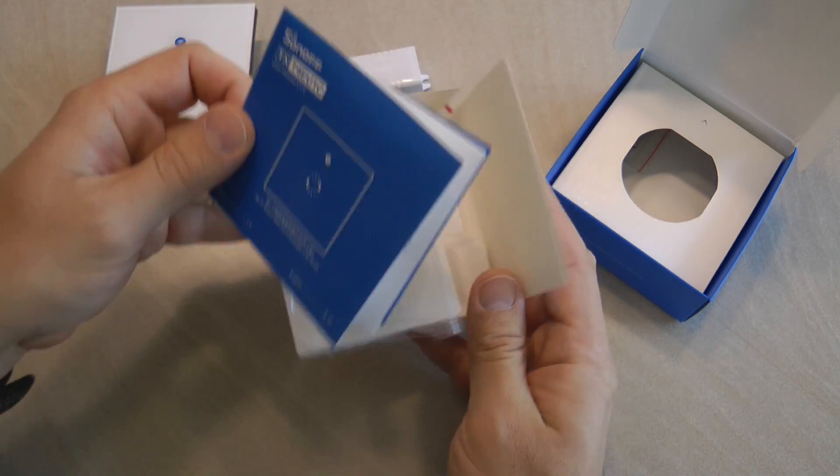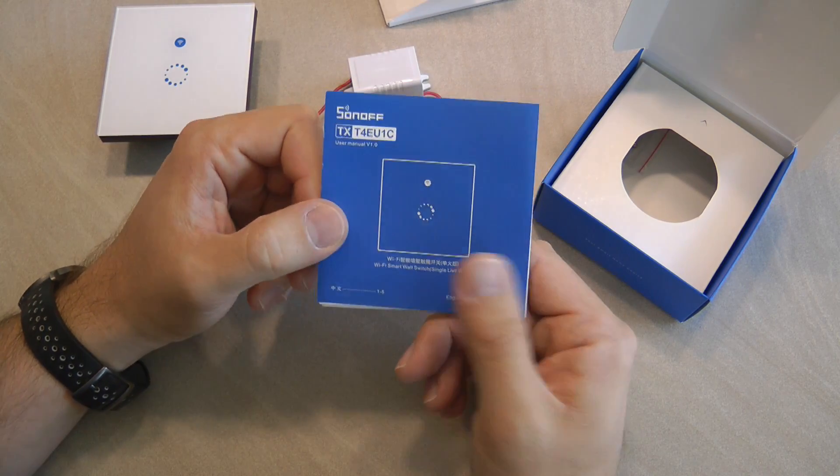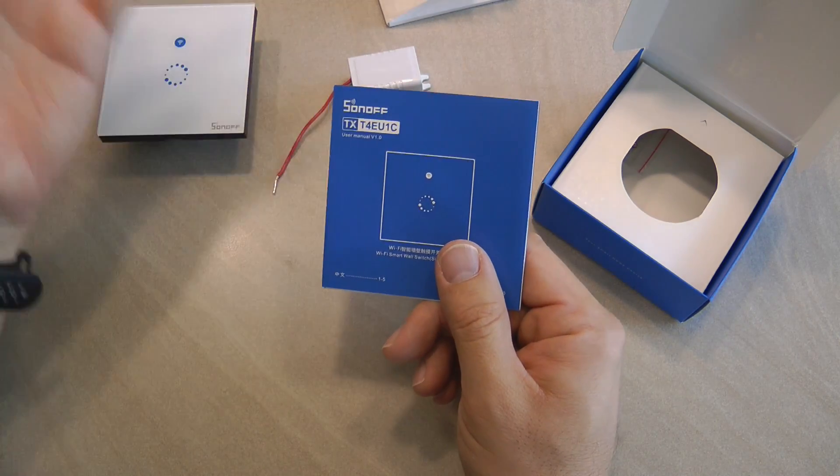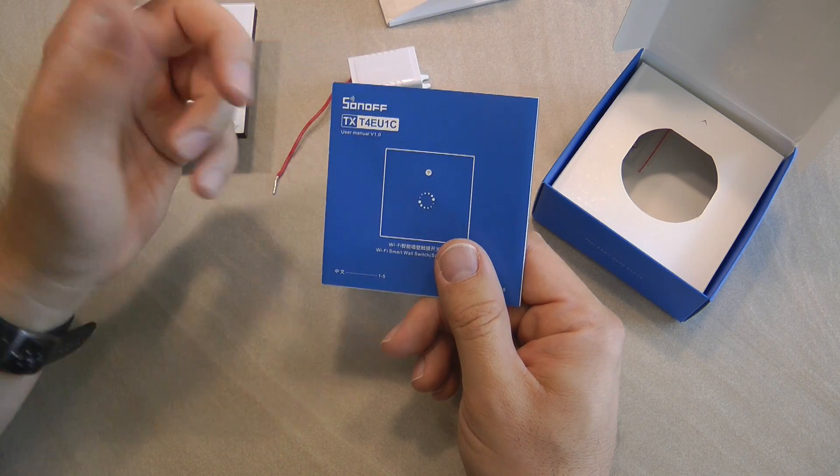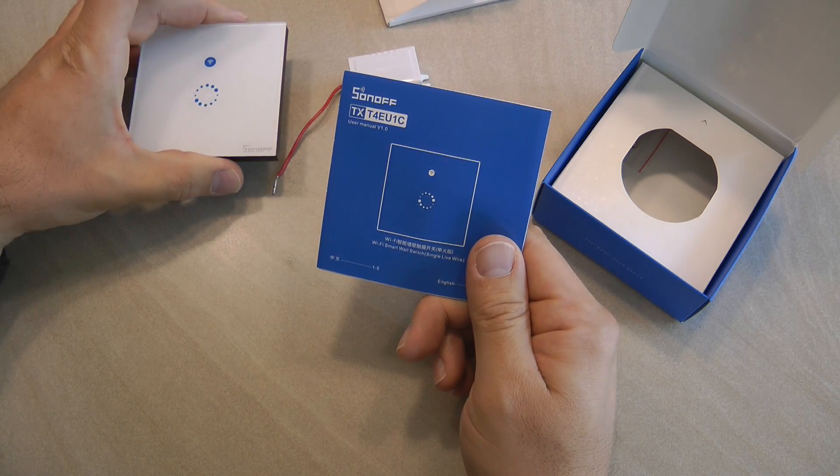On the top you are getting a leaflet and as you can see this is called the T4EU1C. So T4 as in the T4 line in the TX series and EU because it's an EU version and 1C because it's one gang.